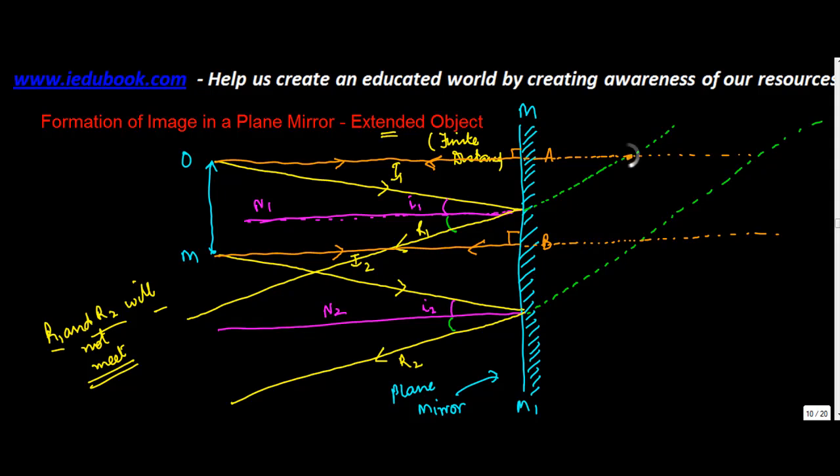Now the point where OA as extended, let's call this as AO', and let's call this as MBM'. So the point of intersection of OA as extended with the reflected ray as extended to the other side of the mirror is going to be the top point or image of the top of this object which is O which is denoted by O'. Similarly M' is the point of intersection of MB as extended and reflected ray as extended.